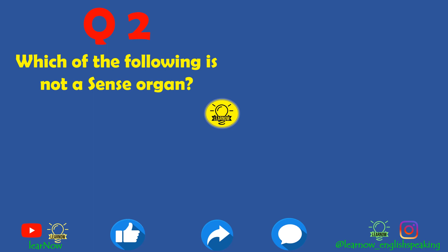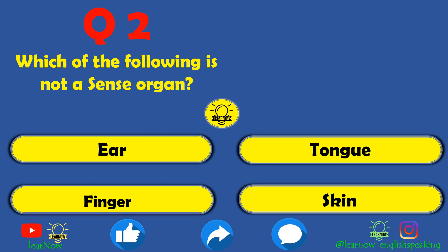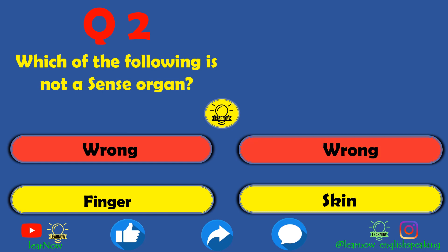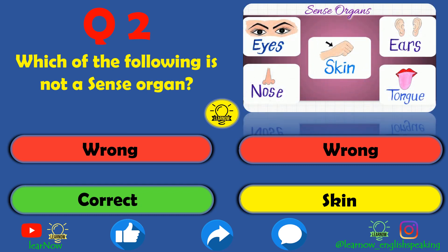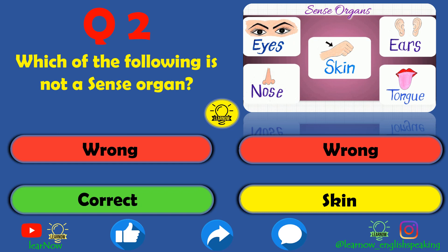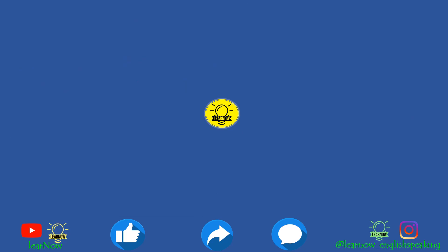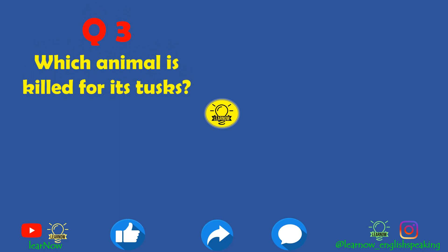Next question: which of the following is not a sense organ? The options are ear, tongue, finger, and skin. Finger is the correct answer. Ear, tongue, and skin are all sense organs. The five sense organs are eyes, ears, nose, tongue, and skin — related to the five senses in human beings.